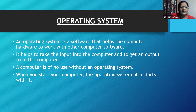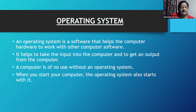An operating system is a software that helps the computer hardware to work with other computer software. It helps to take the input into the computer and to get an output from the computer. A computer is of no use without an operating system. When you start your computer, the operating system also starts with it.